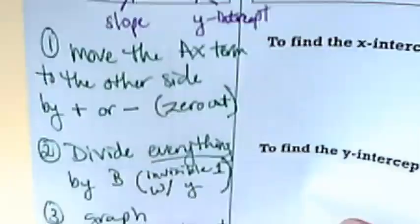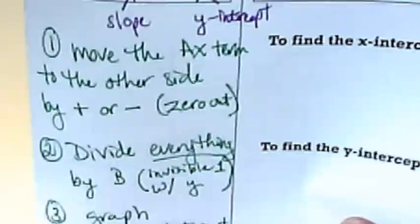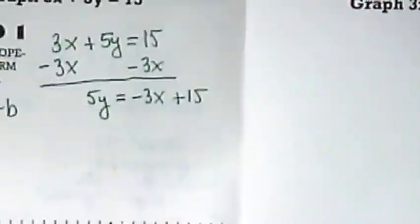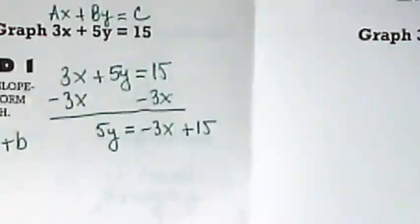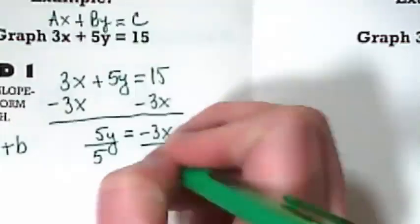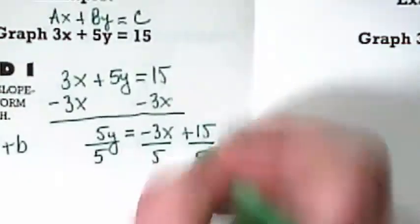Okay, let's go back to our cover. What does step 2 say? Divide everything by b. We're going to get an invisible 1 with the y. What is our b term here? It's 5. And I'm literally going to divide every single term by 5.